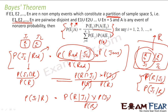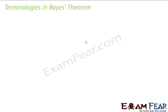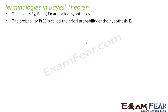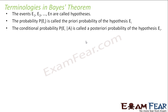Let us learn some terminologies using Bayes' theorem. These events — the partition events — are called Hypotheses. The probability of each hypothesis event is called the Prior probability of the hypothesis. And the conditional probability — probability of E_i given A — is called the Posterior probability of the hypothesis.